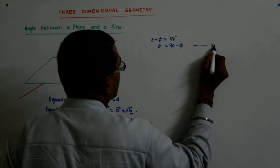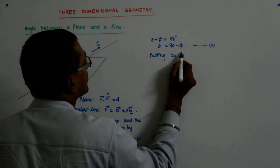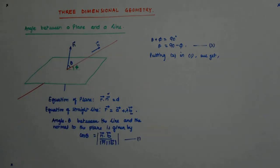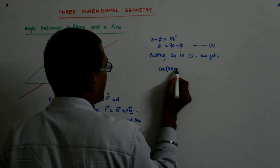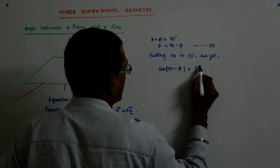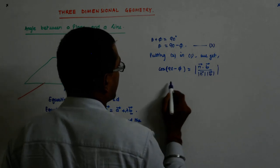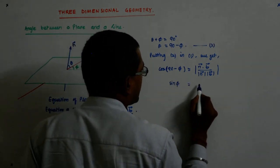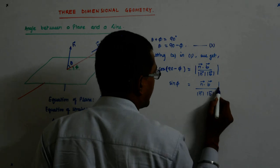Now, if I put that here, I get from putting 2 in 1, we get, what? Cos 90 minus phi is equal to mod n dot b divided by mod n mod b. The cos 90 minus phi is what? Sin phi. So, sin phi is equal to n dot b divided by mod n mod b. That's all.